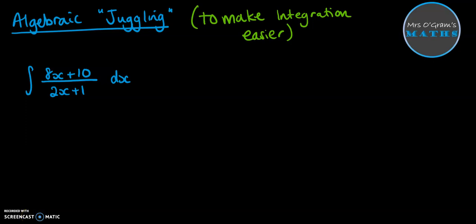Hi, welcome back to Mrs. O'Gramm's Maths. Today we are looking at algebraic juggling. This is when we've got a fraction that we can't deal with in terms of the rational functions we've seen before when we're trying to integrate. So if you look at this example here, the top is not a derivative of the bottom. It's not any multiple of that either, so we can't look at the natural log things we were looking at in previous videos.